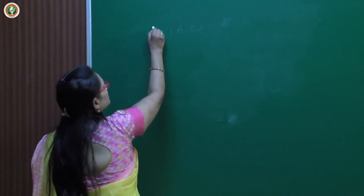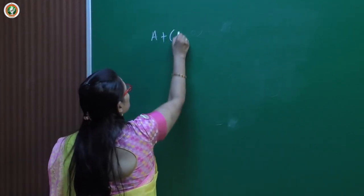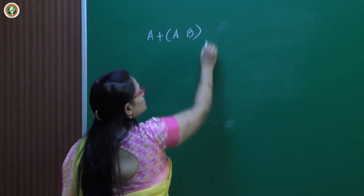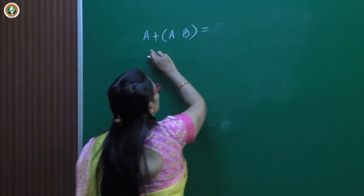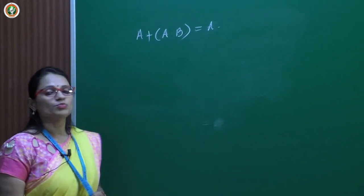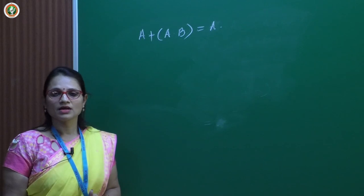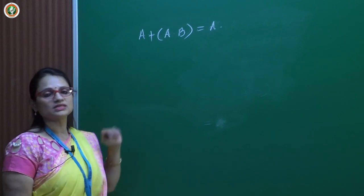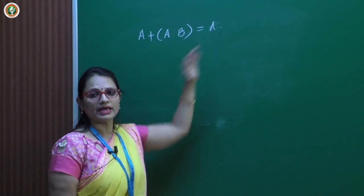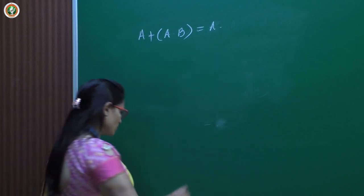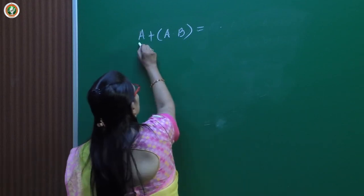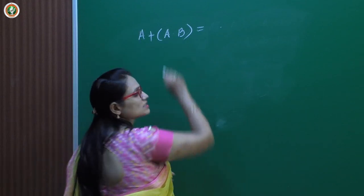Here I am going to prove the absorption law. This law says that A plus A into B is equal to A. Now let us prove this — whether if I simplify this I am getting A or not. To prove this I will start with this equation and then simplify it.